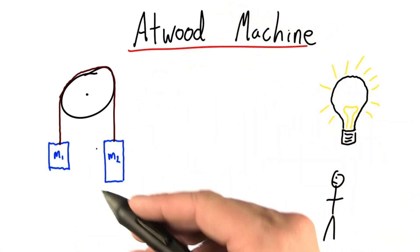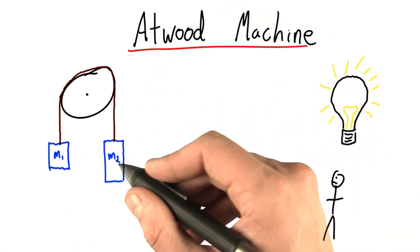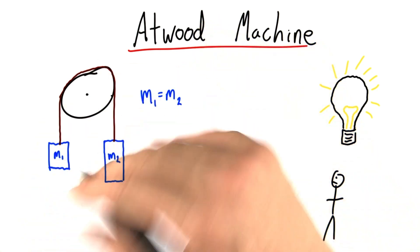So when I'm doing this sort of thought experiment in my head, one question I'm going to ask is, what happens when the masses are equal? Will this whole system be motionless?